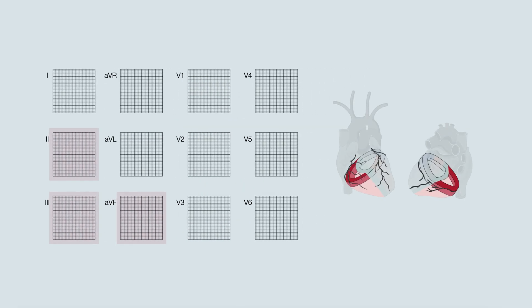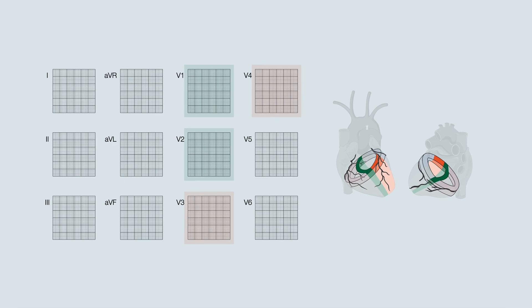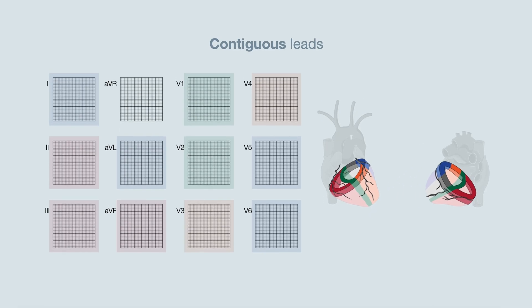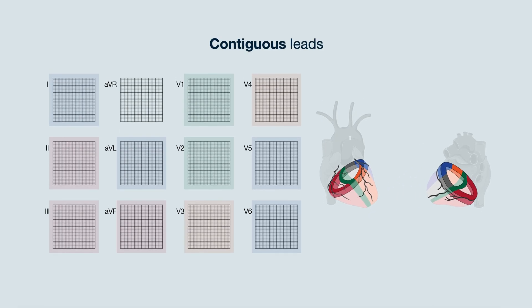Leads 2, 3, and AVF are the inferior leads. Leads 1, AVL, V5, and V6 are the lateral leads. And V1, V2, and V4 are the anterior septal leads. It's important to know this when interpreting an ECG. These groups of leads are known as contiguous leads. When an abnormality is detected on ECG and involves the contiguous leads, it is likely a vascular injury since it's within the same vascular territory.